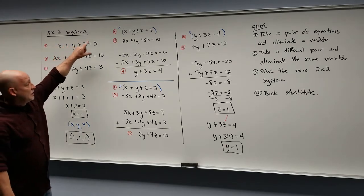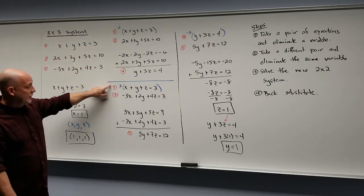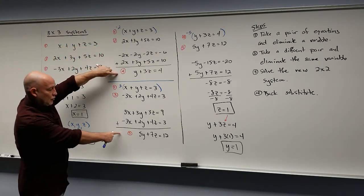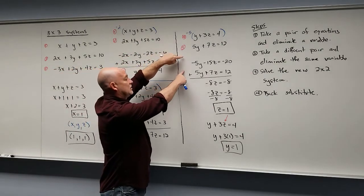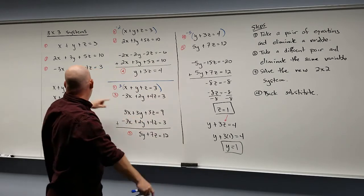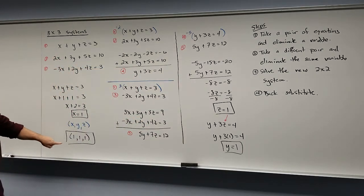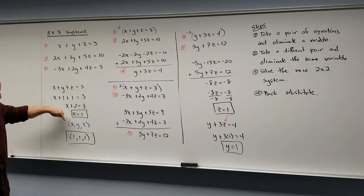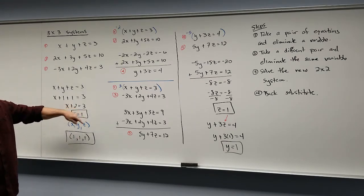So there's a little bit more work, but you can use the same steps every time: take a pair of equations and eliminate a letter, take a different pair and eliminate the same letter — that gives you two brand new equations. Bring those over to the side and solve that system. Once done, back substitute into any one of the originals to find the third value. Always give your answer as an ordered triplet: x, y, z.